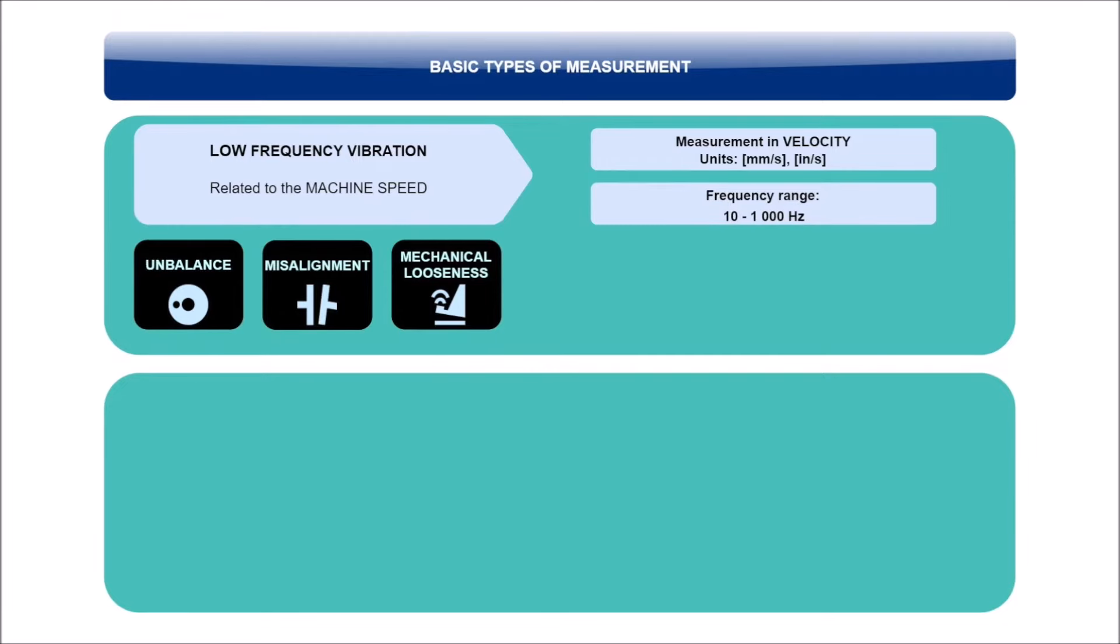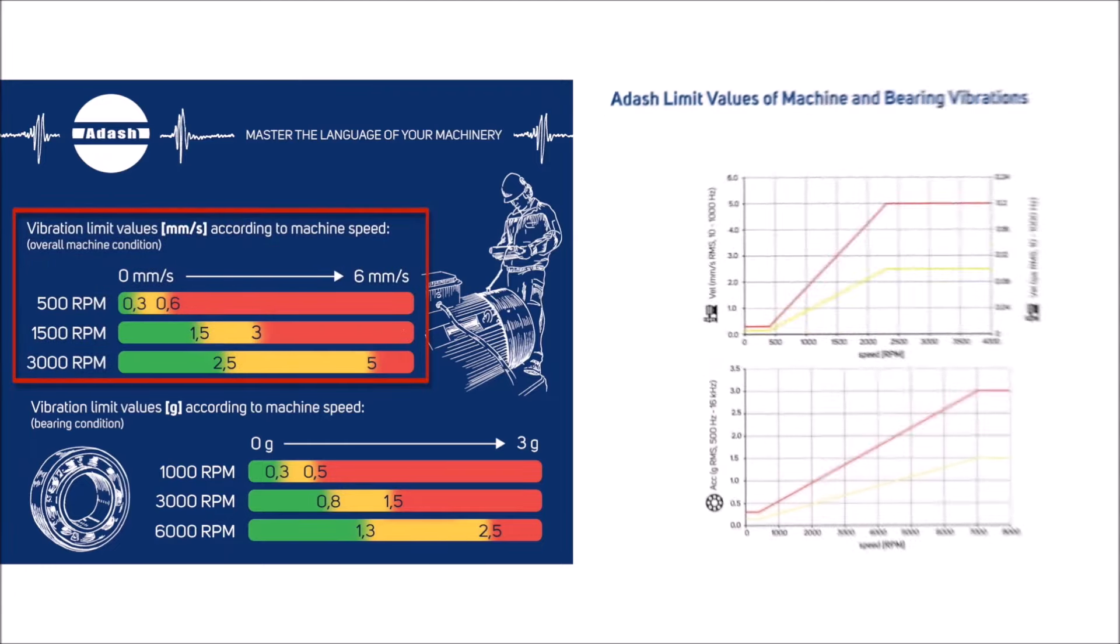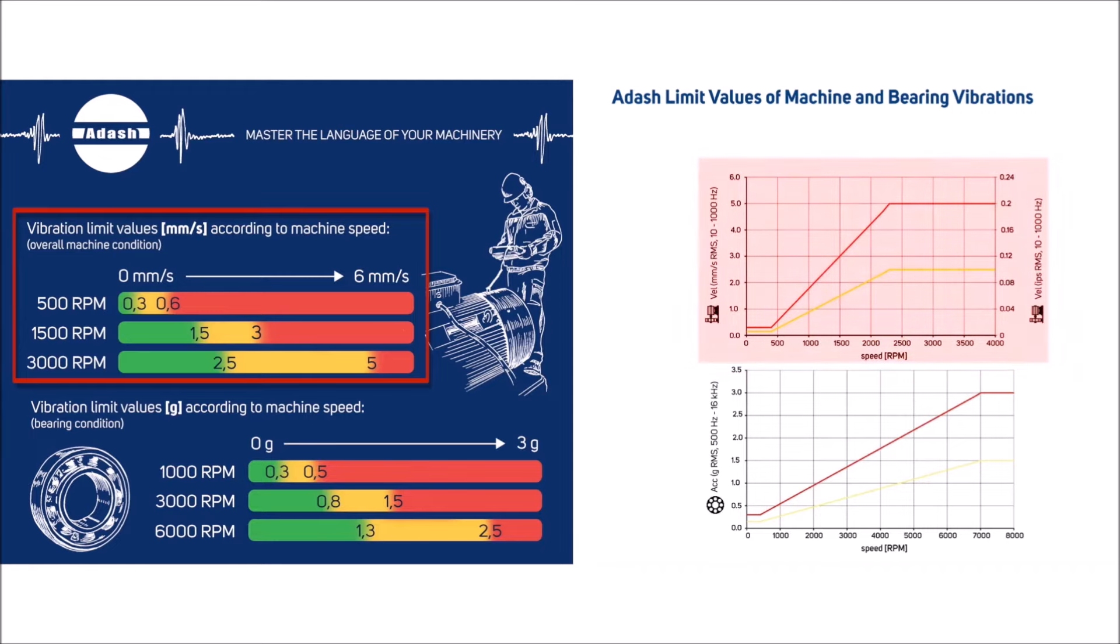This frequency range is also applied on ISO 10816 standards. These standards take into account the size of the machine and its foundation. ADASH has defined vibration limit values which are related to the speed of the machine, not to the size of the machine. The frequency of 10 to 1000 Hz is also applied.